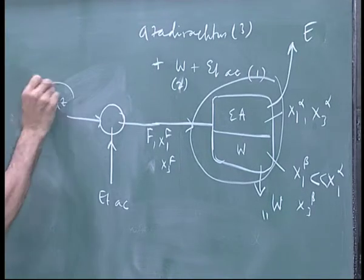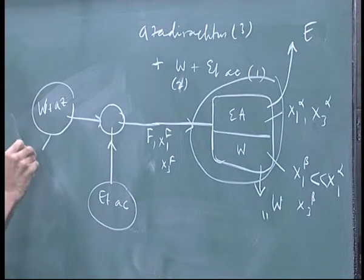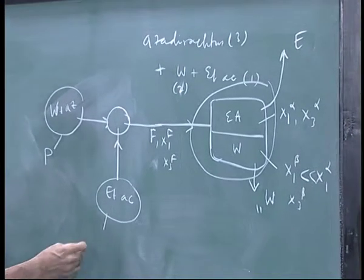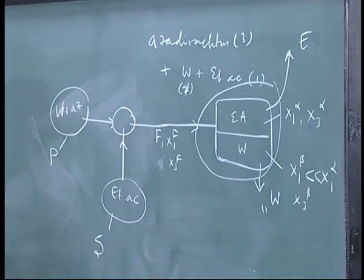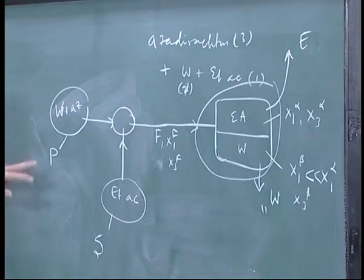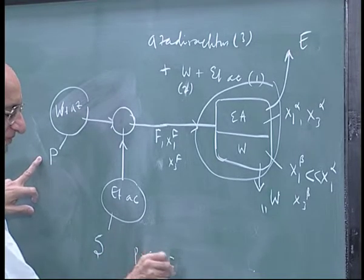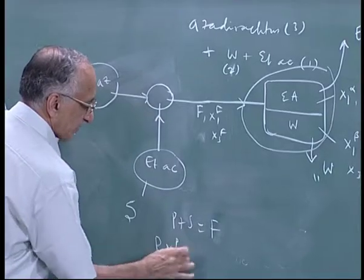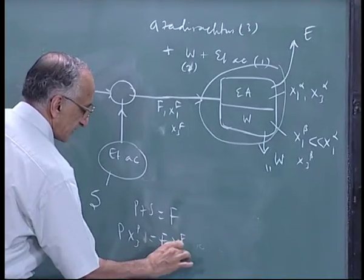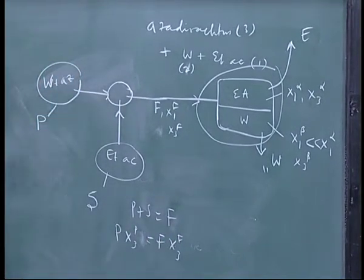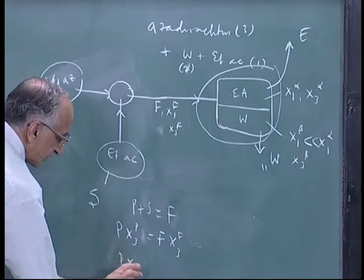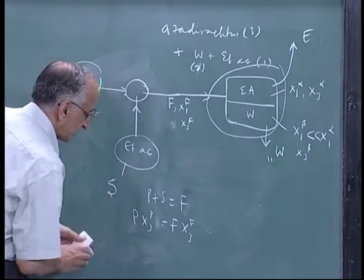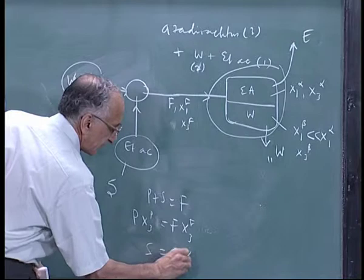But you have this you add a certain amount of ethyl acetate. Now the ratio of this, this to this we will call this primary feed and this is you have already used E. This is solvent addition S. So this P plus S is also equal to SF and then P x3P is equal to F x3F.